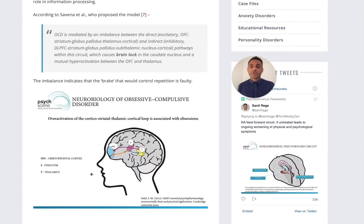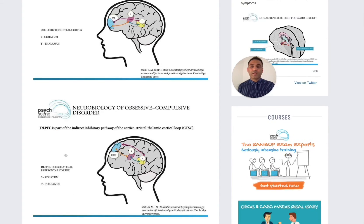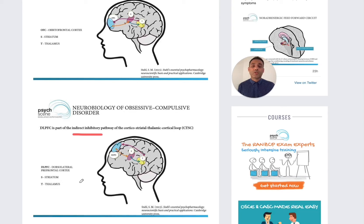Looking at the two pathways: the excitatory pathway involves over-activation of the corticostriatal thalamic cortical loop involving the orbitofrontal cortex, and this over-activation is associated with obsessions. The inhibitory area involves the dorsolateral prefrontal cortex — this is the brake — and the imbalance between the two results in over-activation and produces lots of obsessions and associated compulsions. This is the indirect inhibitory pathway.